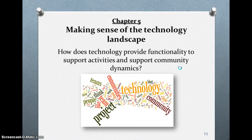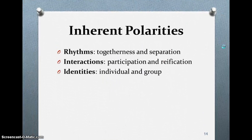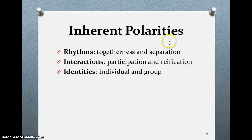Now let's move on to chapter five: making sense of the technology landscape. How does technology provide functionality to support activities and support a community's dynamics? This is really important because we see how technology has influenced our lives. How can it support a community of learning? Think about that each day, whether you're an educator or have another type of job or profession, and how technology fits into your community and how it supports it. Important things here are rhythms, interactions, and identities. By rhythms, you think of togetherness and separation. Think about our class — we have times of togetherness, like doing a web conference, and times of separation, like doing a project.